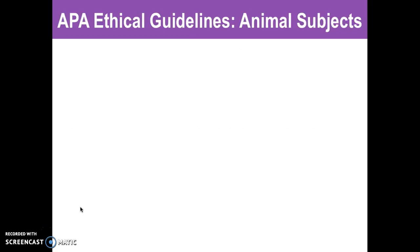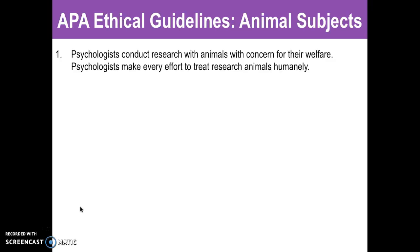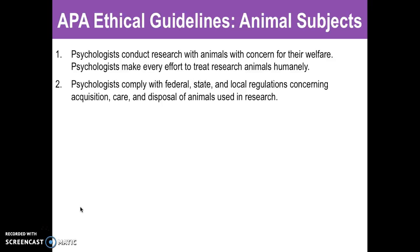Now for animal subjects. We do use animals in psychology because sometimes it's unethical to use humans. The first guideline: if you're going to conduct research on animals, you have to be concerned with their welfare and make every effort to treat your research animals humanely. You have to comply with federal, state, and local regulations for the acquisition, care, and disposal of these animals.